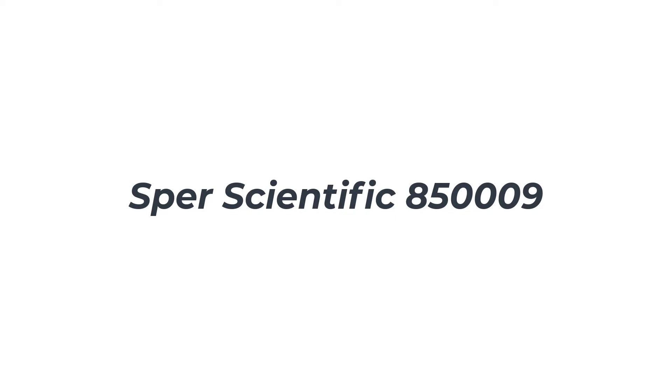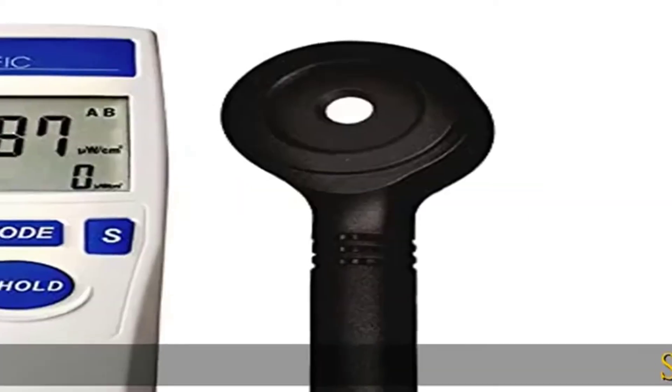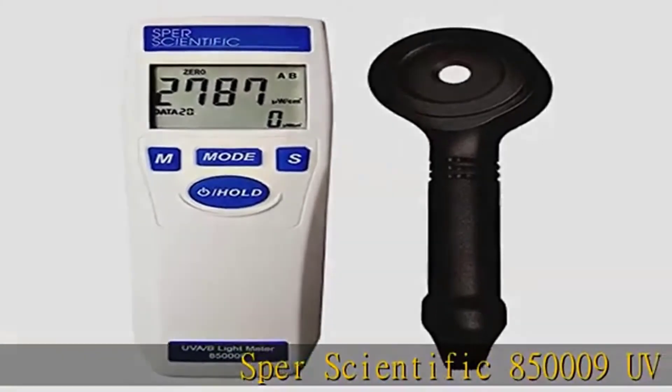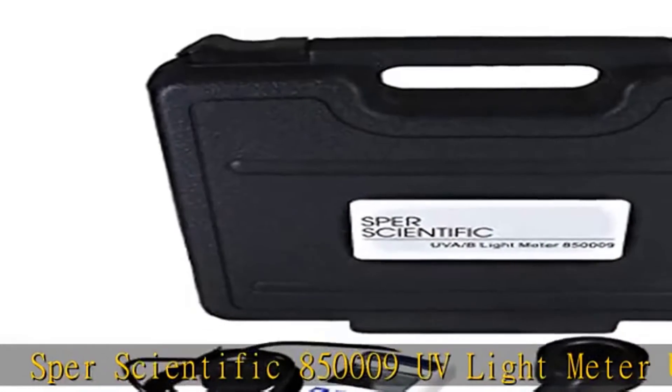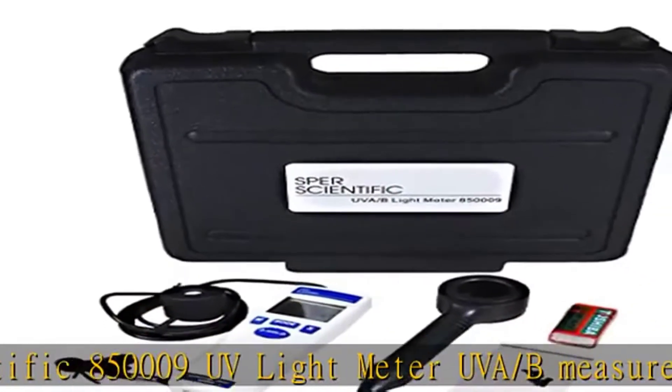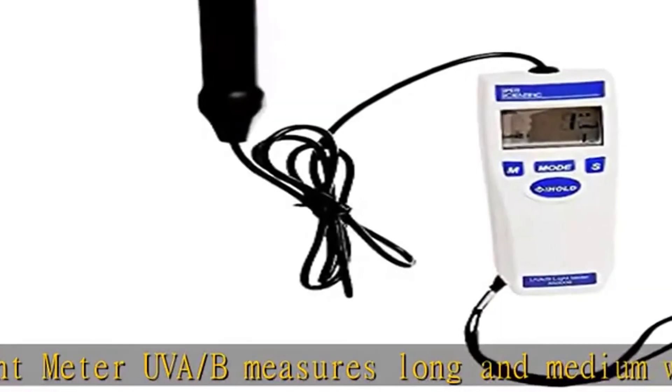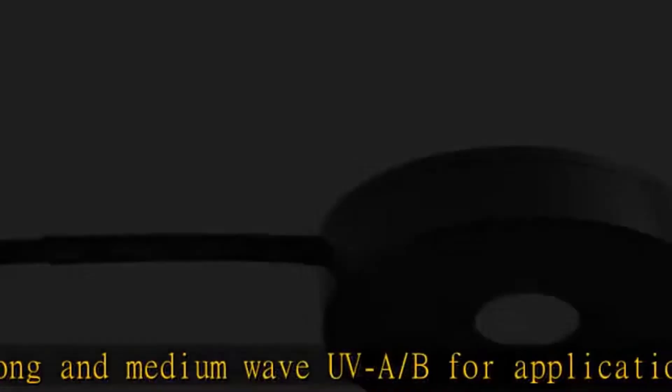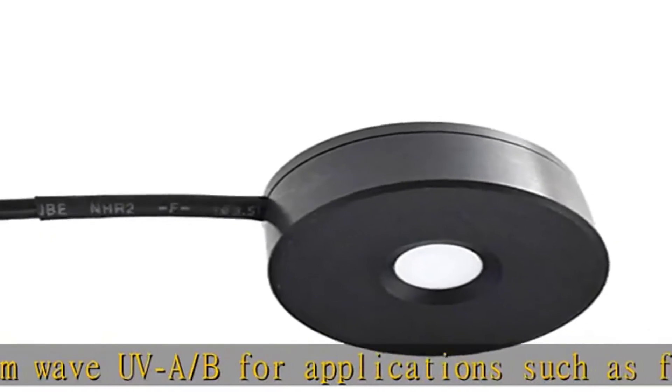Number 2: Sper Scientific 85009. The Sper Scientific 85009 is designed for indoor and outdoor applications. It is sensitive enough to pick up low output from lamps in museum and art gallery settings, and can also be used to check hospital sterilization lights.